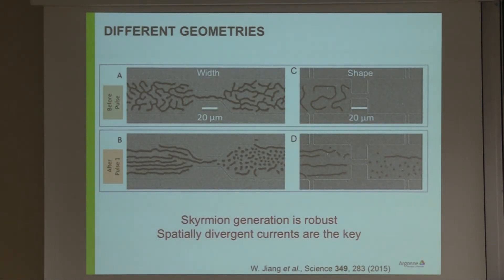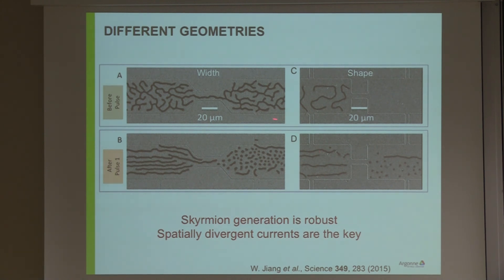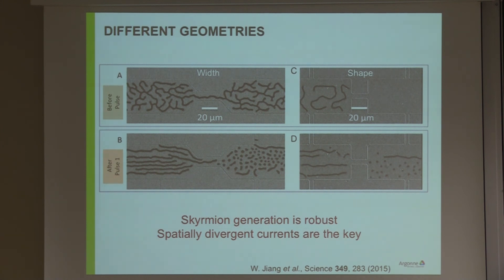We tested this with several different geometries and it works every time. It doesn't depend completely on the width of the constriction — as long as you have diverging currents at the end, you can create skyrmions. These before-and-after images show two different geometries. What is key is that you have diverging currents and then you can break off skyrmions from these stripe domains.